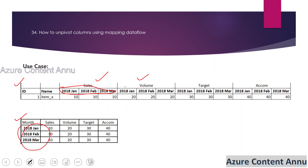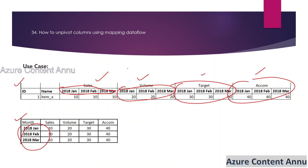If we consider these as different datasets, then sales is a dataset, volume is another dataset, target is the third dataset, and accommodation is the fourth dataset. So we have to convert this data into this kind of output. Let's directly jump into Dataflow and see how to convert this input into this kind of output.